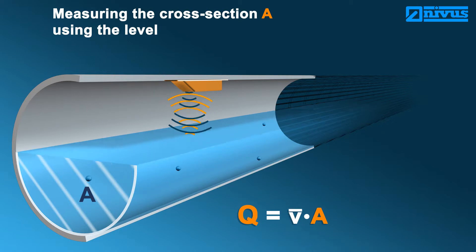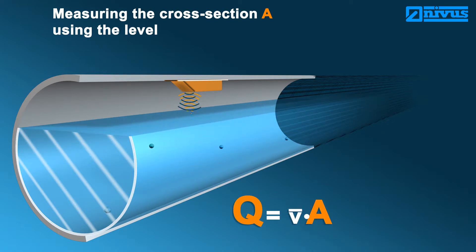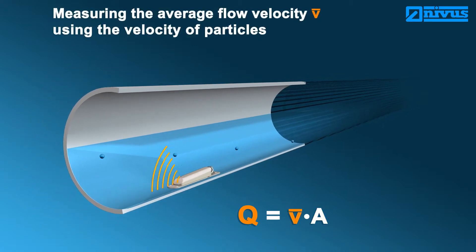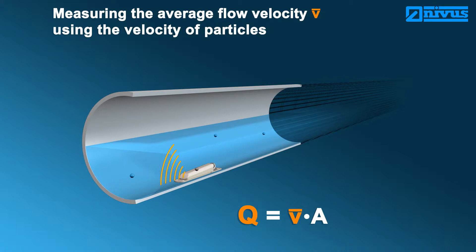The flow velocity is detected by measuring the particle velocity. Most media, particularly wastewater, contain dirt particles or gas bubbles moving with the same velocity as the medium. The velocity of the particles is measured using ultrasound. As soon as the velocity changes, the flow normally changes as well.